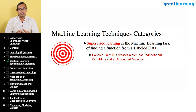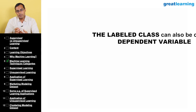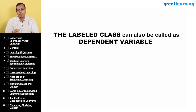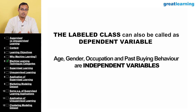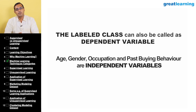This column indicating which customer has churned and which has not is called the labeled data. When I analyze this to understand the profile of churned versus non-churned customers, I use a supervised learning technique. The labeled class column is also called the dependent variable, while age, gender, occupation, and past buying behavior are called independent variables.